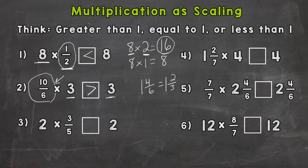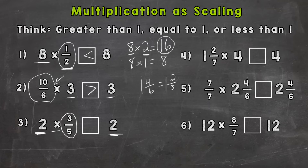Let's take a look at number 3. We have a 2 on each side. On the left side, we have 2 times 3 fifths. We need to think: is 3 fifths greater than a whole — going to raise the value of that 2? Is it equal to 1 and keep the value the same? Or is 3 fifths less than 1 and going to drag the value of this 2 down? Well, 3 fifths is less than 1, so 2 times 3 fifths is going to give us an answer that's less than 2.